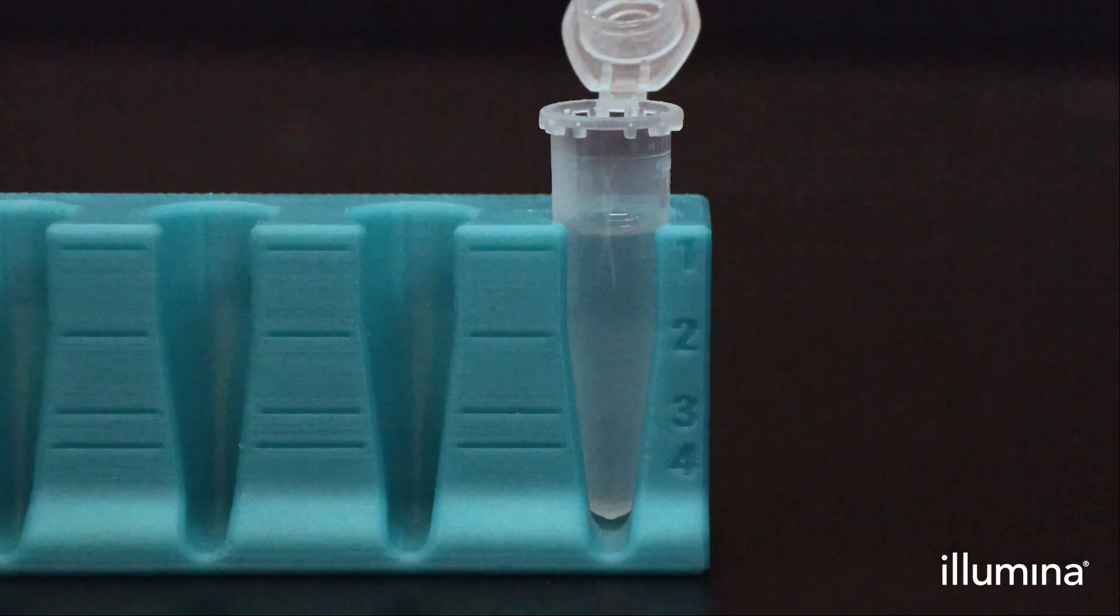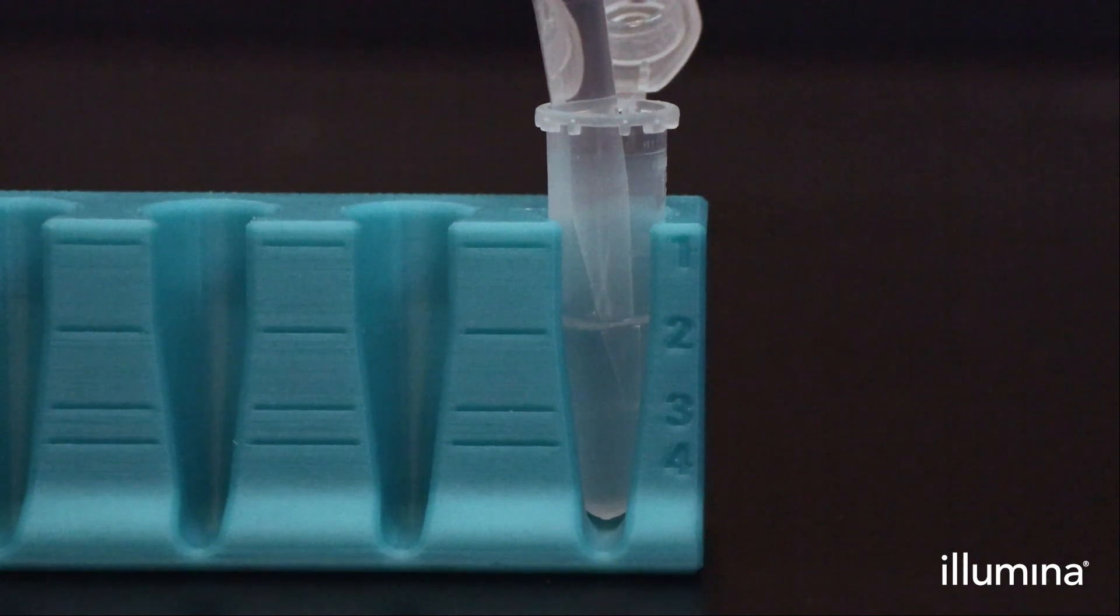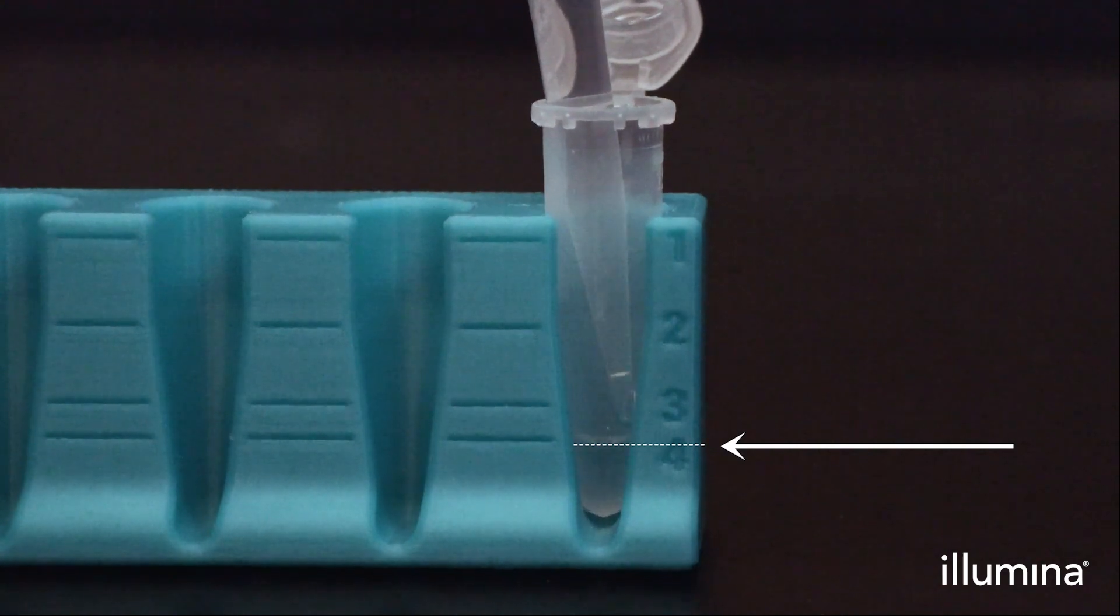Aspirate and discard the aqueous supernatant to the 40 microliter marker on the tube stand without disturbing the pips pellet. Add 1 mil more of 1x wash buffer and repeat these steps to perform four total washes before moving on to volume regulation.